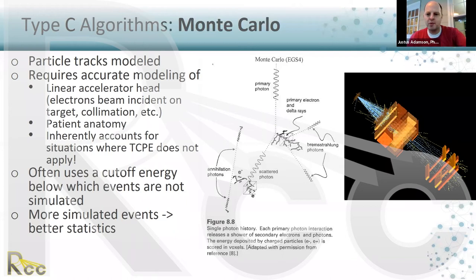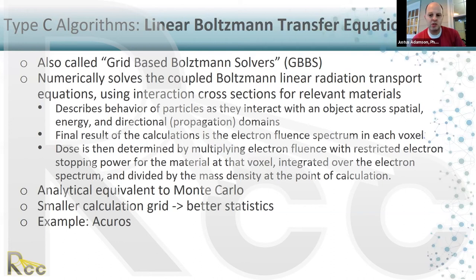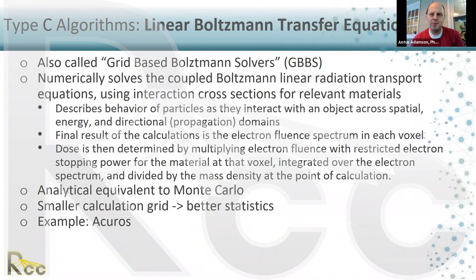Grid-based Boltzmann solvers (GBBS), also called linear Boltzmann transport equation solvers, numerically solve the coupled Boltzmann radiation transport equations using interaction cross sections for relevant materials. They describe particle behavior as particles interact with an object across spatial, energy, and directional domains. The final result is the electron fluence spectrum in each voxel; dose is then determined by multiplying the electron fluence by the restricted electron stopping power of the material at that voxel, integrated over the electron spectrum. Better statistics are achieved with a smaller calculation grid rather than more particle histories. The main example of this algorithm type is Acuros.